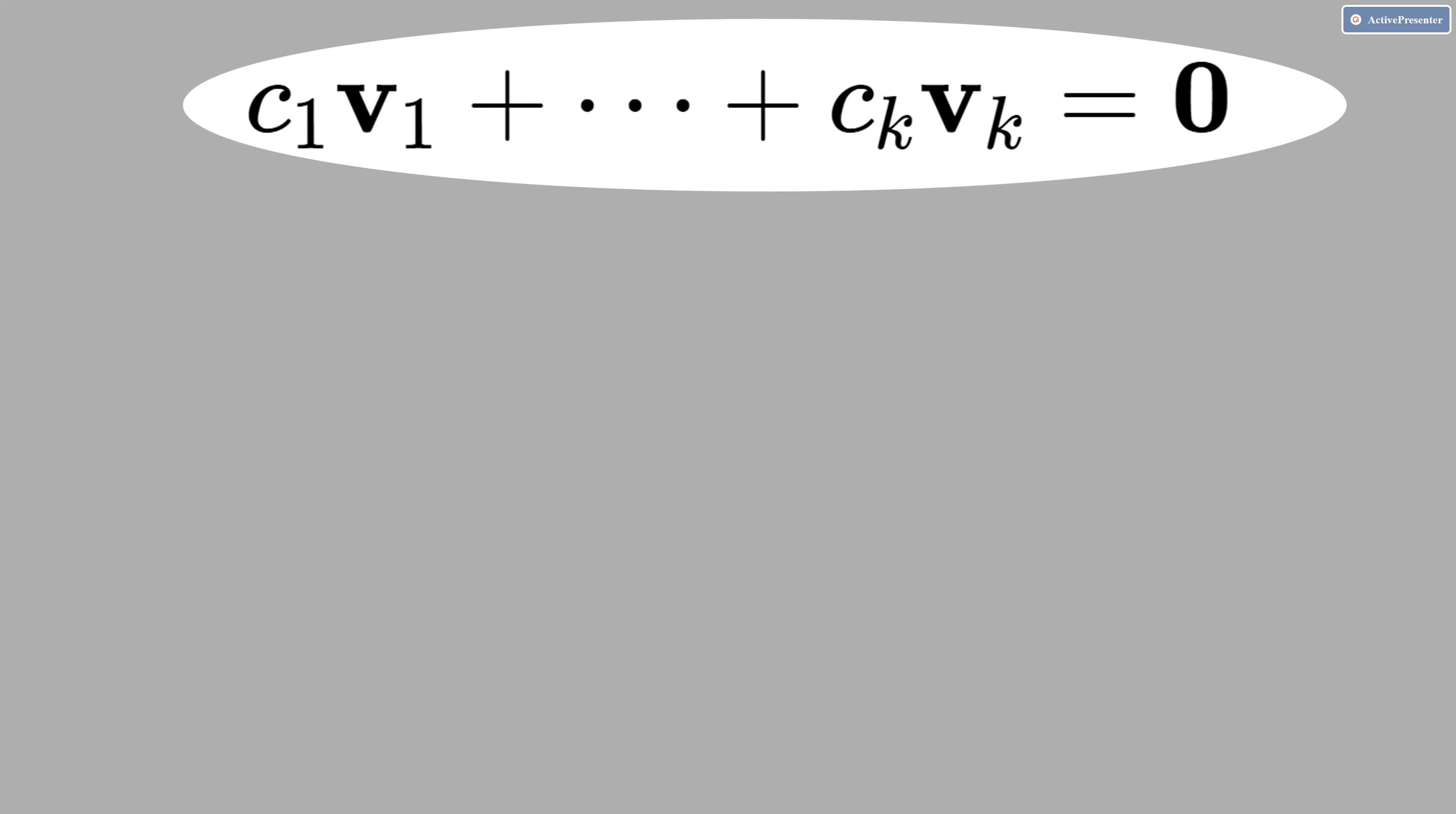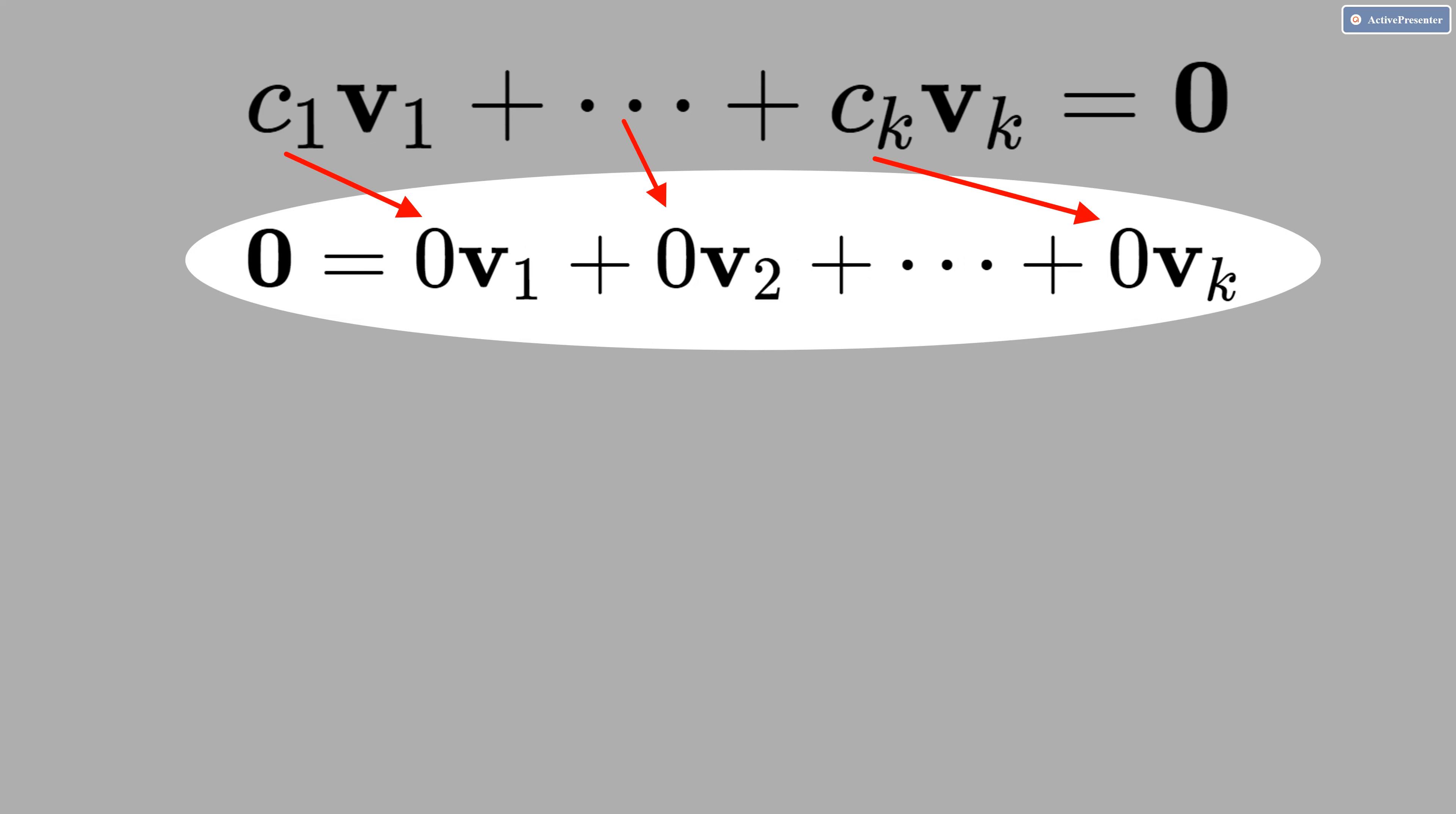The vectors v are independent only if all c's, c1, c2, ck, they are all zeros. In other words, this equation here has to be true.